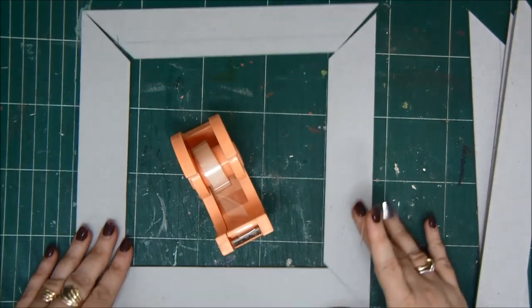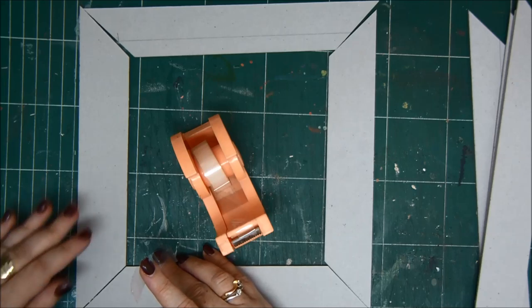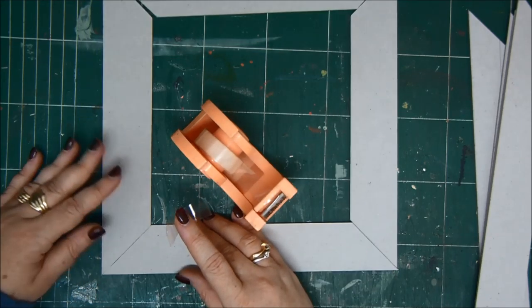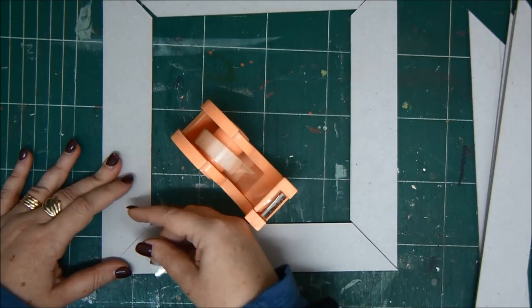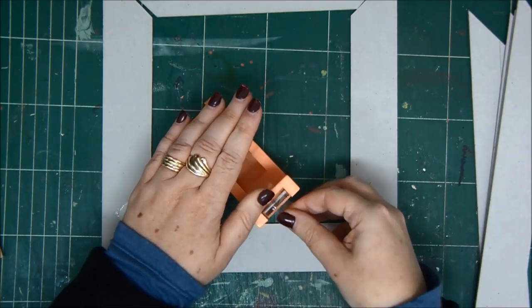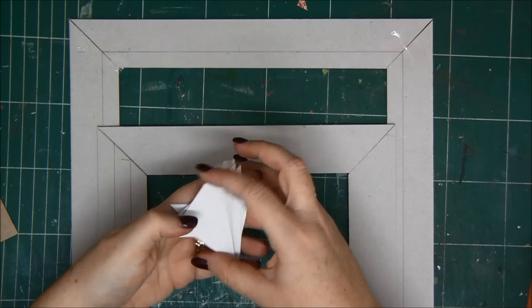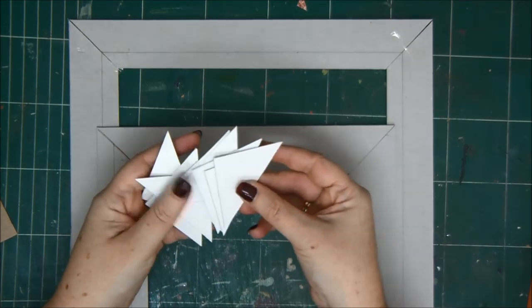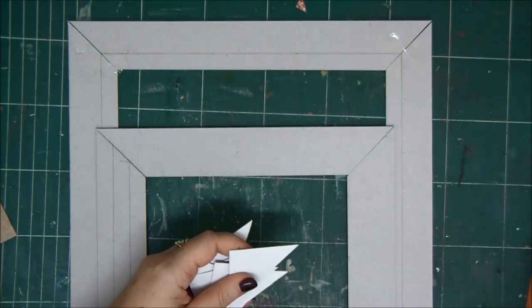When you build your frame just put it like this and just use some tape to secure it and later we're gonna add some more stronger bind. Here are two frames. You have a smaller frame and a bigger frame.